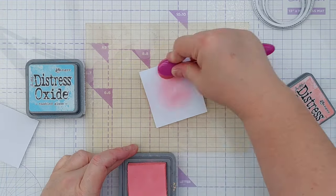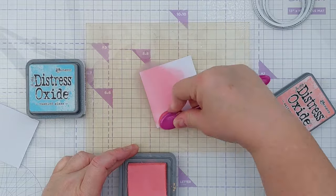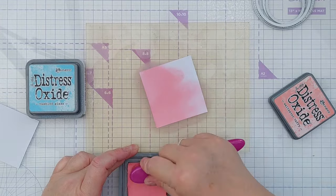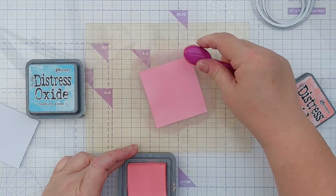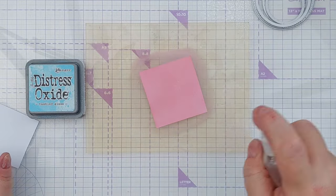This is DIY shimmer spray that I make with Cosmic Shimmer Pixie Powder White Pearl Mixer. If you want to know more about DIY shimmer sprays, I do have a video which I will link down in the video description.